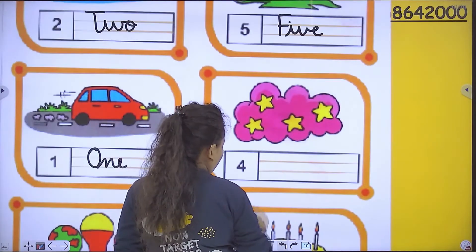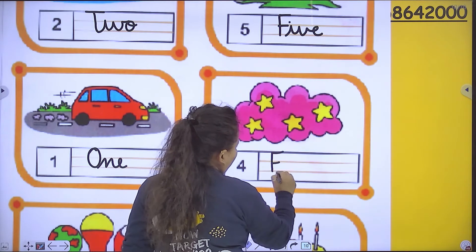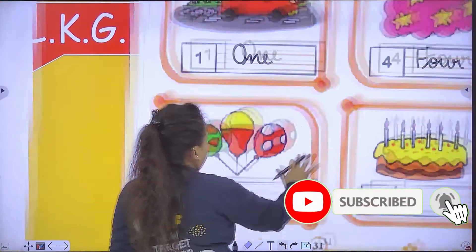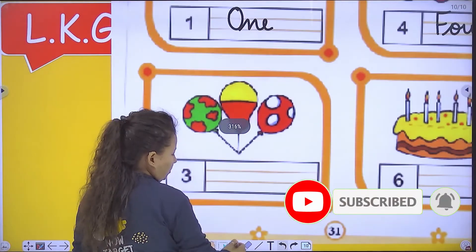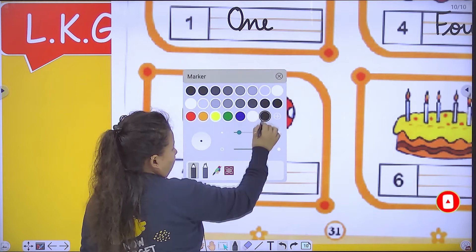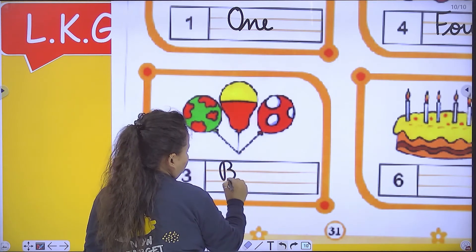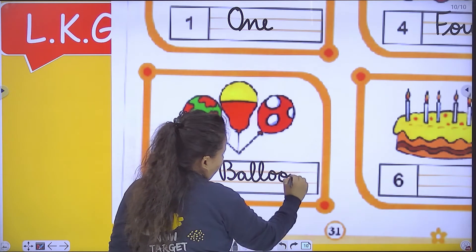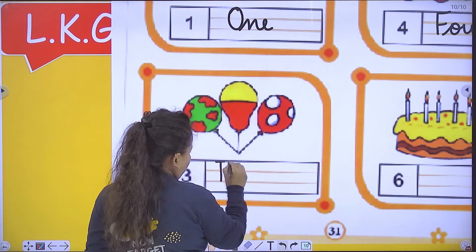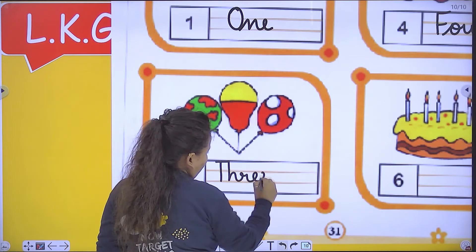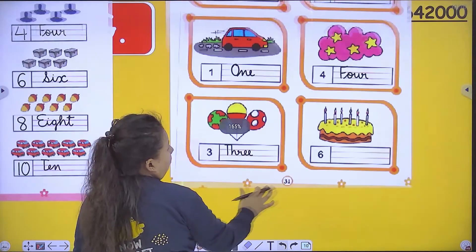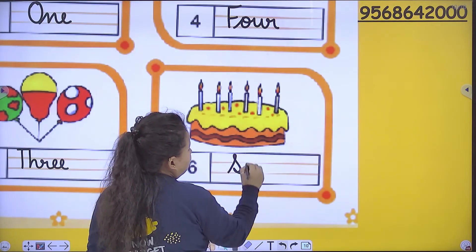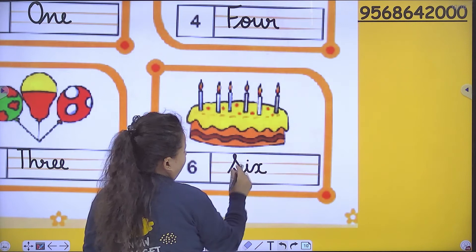Number of stars — four, F O U R, four. Number of candles — three. Number of candles — six. Okay.